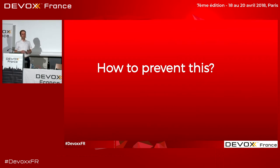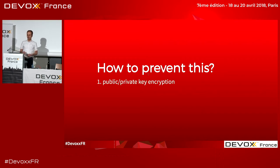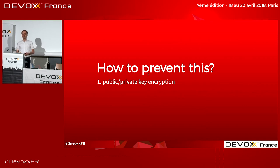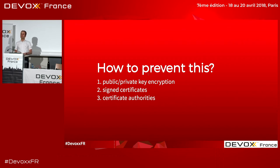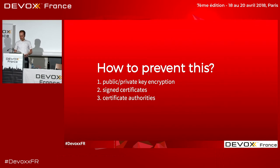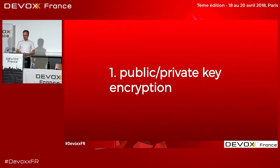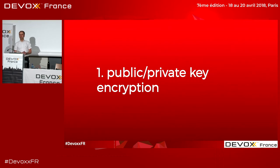So how could we prevent this? The answer is related to Transport Layer Security. What we basically need to know and understand are three things. First of all, we need to know a little bit about public-private key encryption. Secondly, we need to know about certificates and how we could sign a certificate. And finally, we need to know about certificate authorities. We'll dive into each of these three topics.